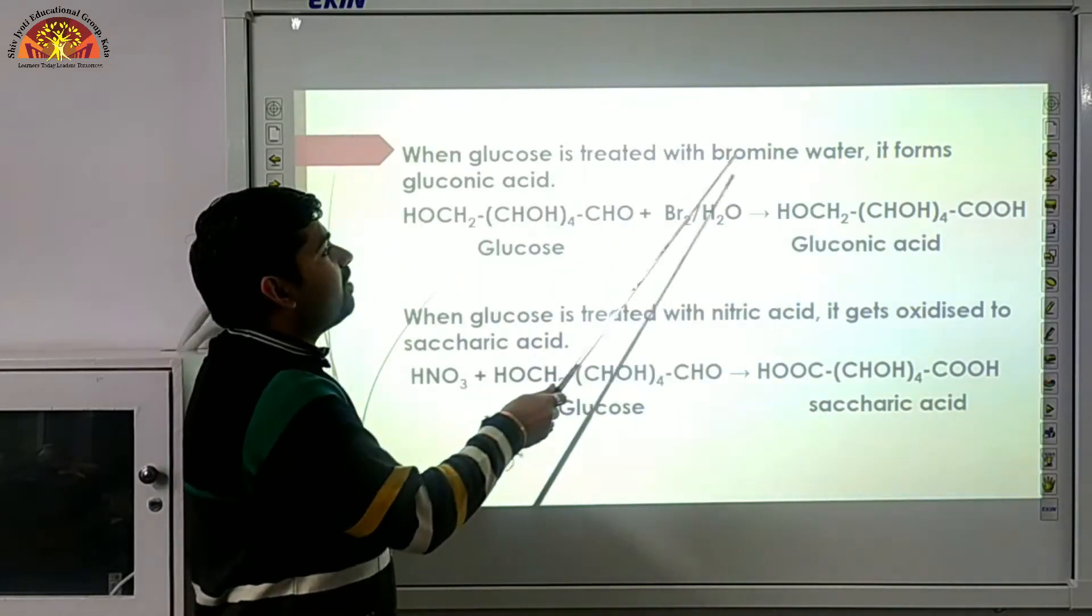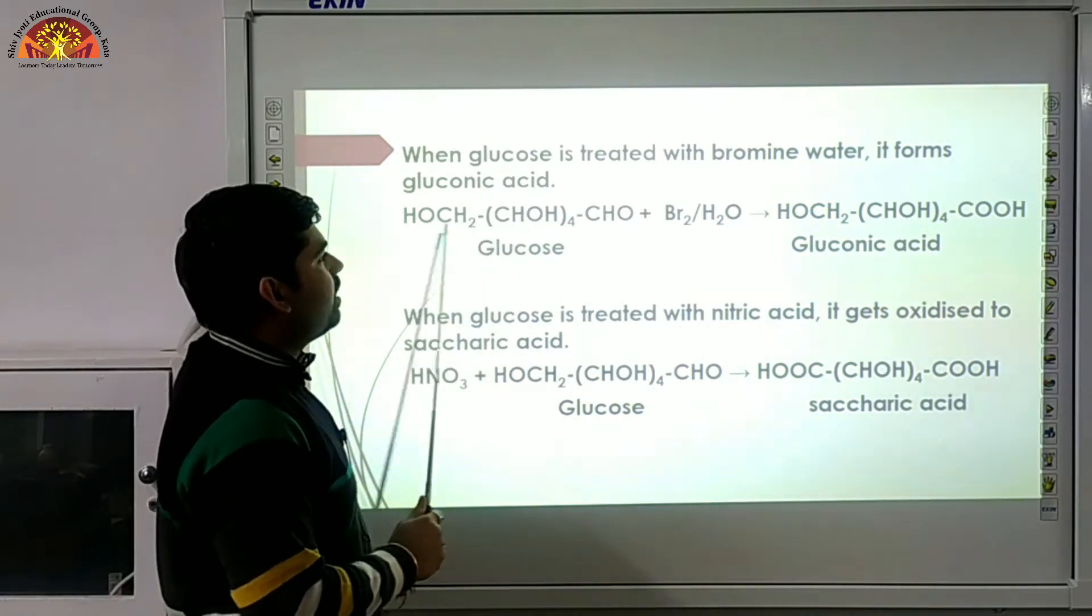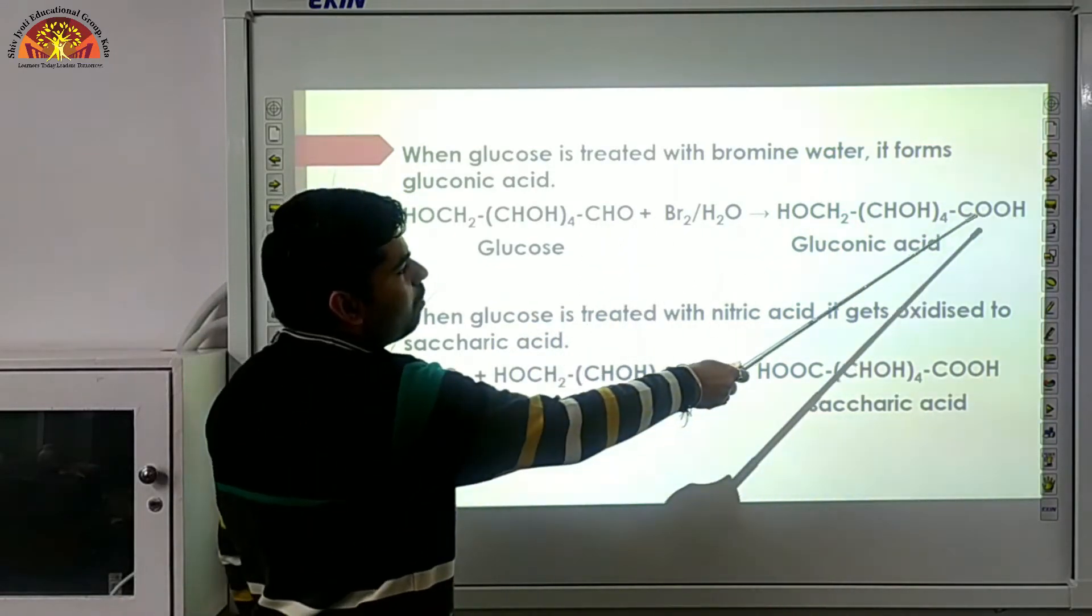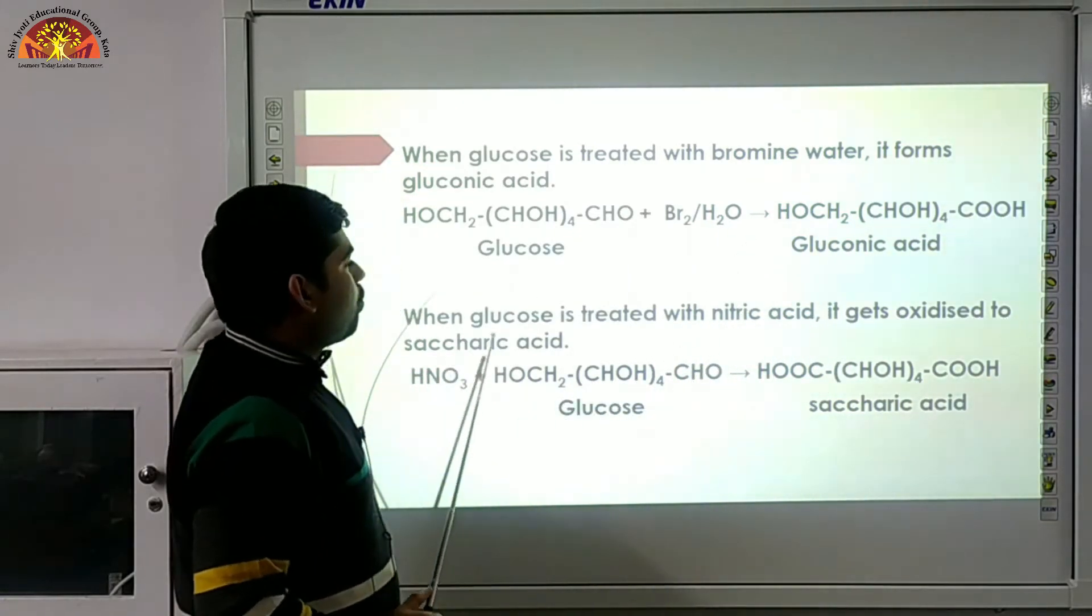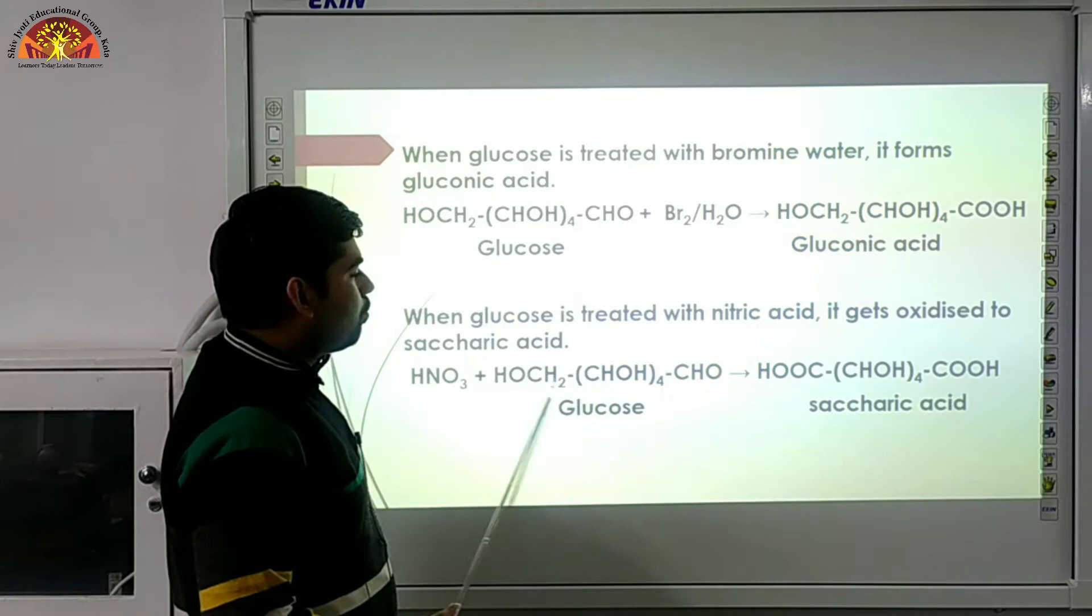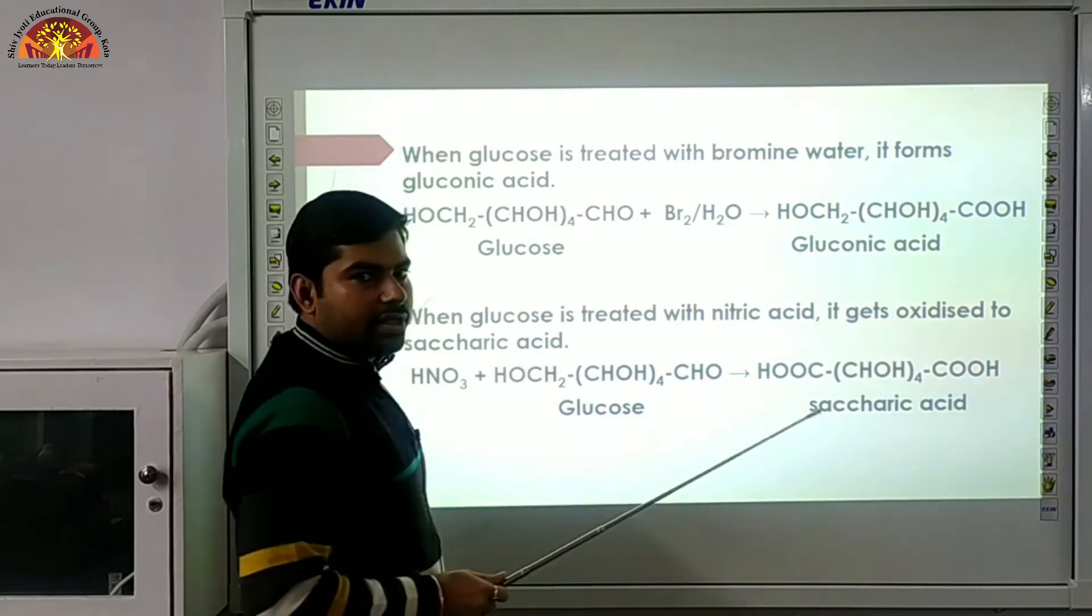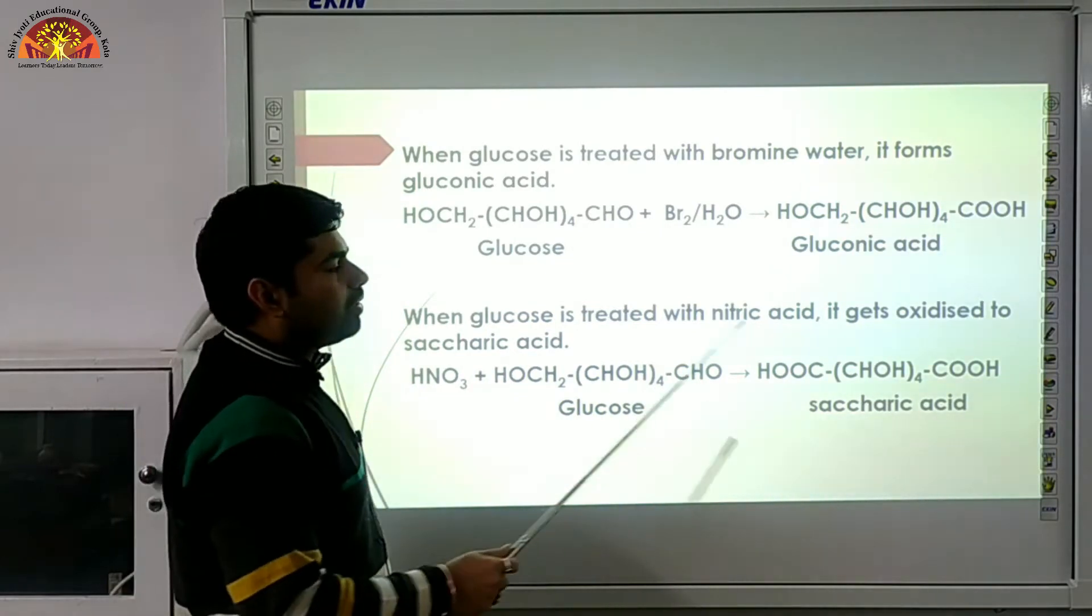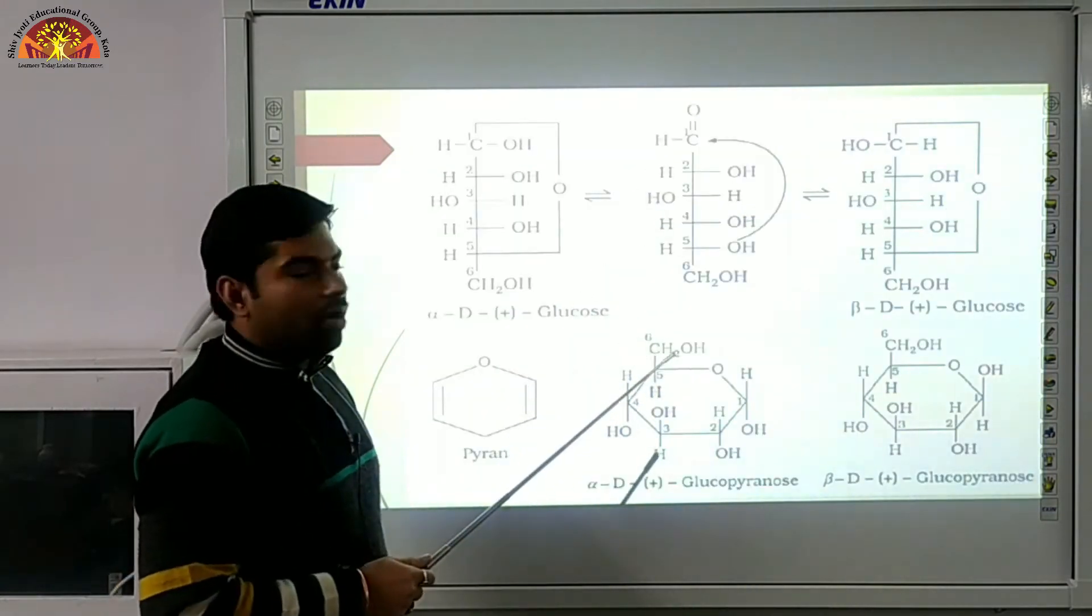When glucose is treated with bromine water, it forms gluconic acid. This structure is glucose C6 H12 O6, which is reacted with bromine water. The aldehyde is converted to carboxylic acid, which is called gluconic acid. When glucose is treated with nitric acid, it gets oxidized to saccharic acid. The CHO is changed by the carboxylic acid. If you have two parts of carboxylic acid, this formula is called saccharic acid.